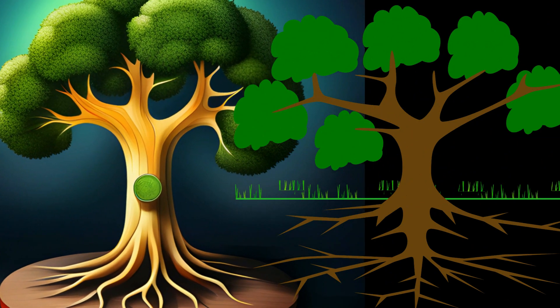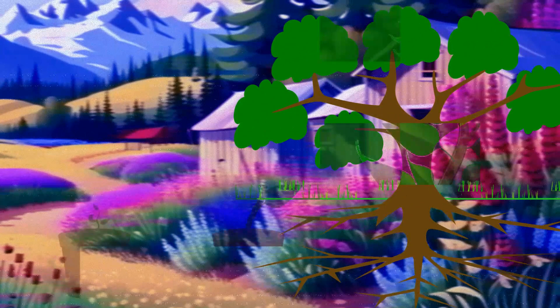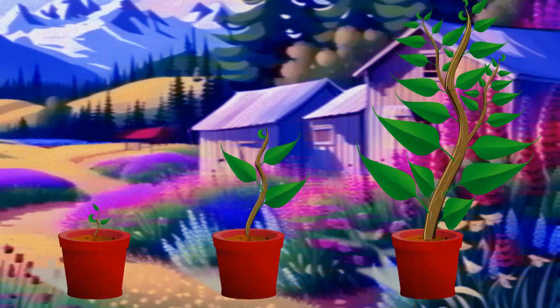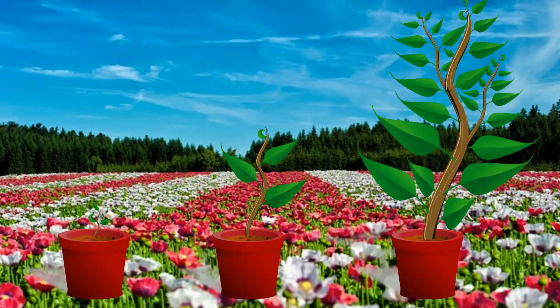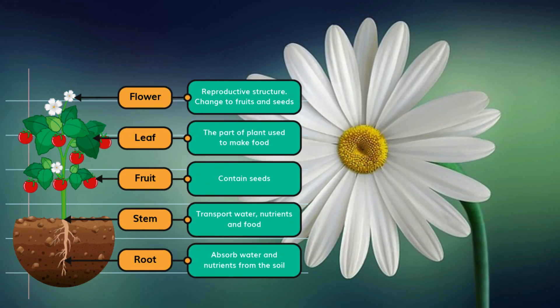Every plant has a body, just like you do. But their body is a bit different. Can you guess how? Plants have roots, stems, leaves, flowers, and fruits.